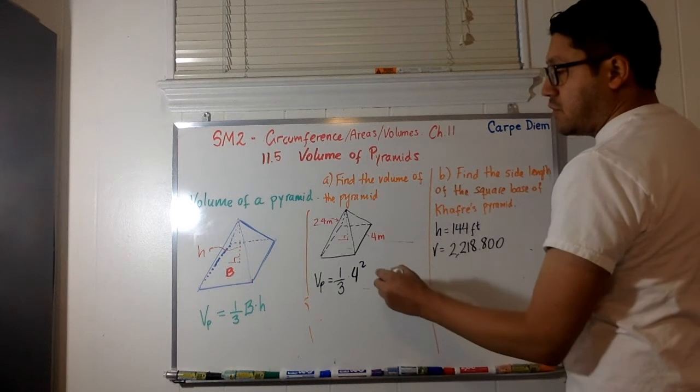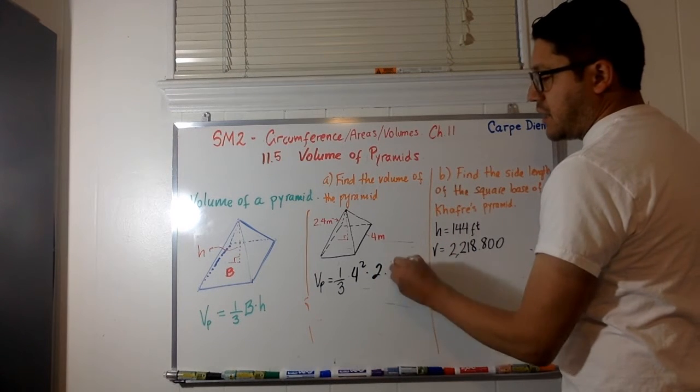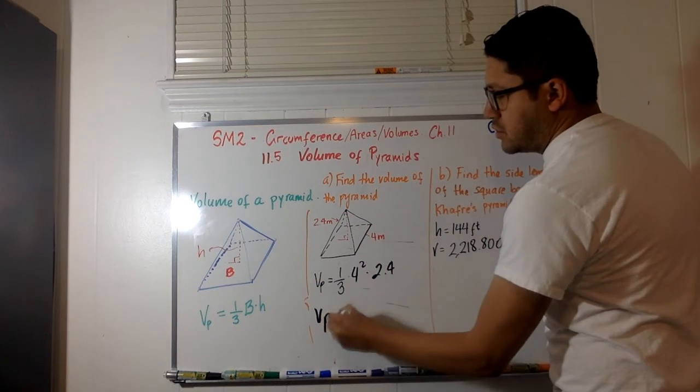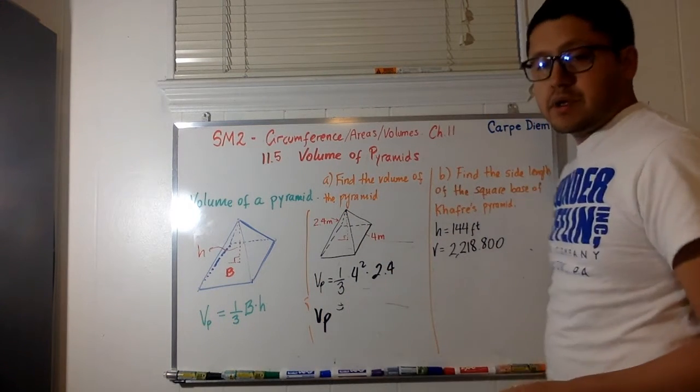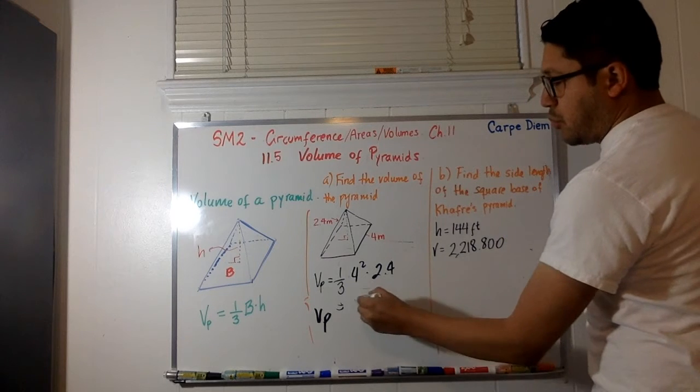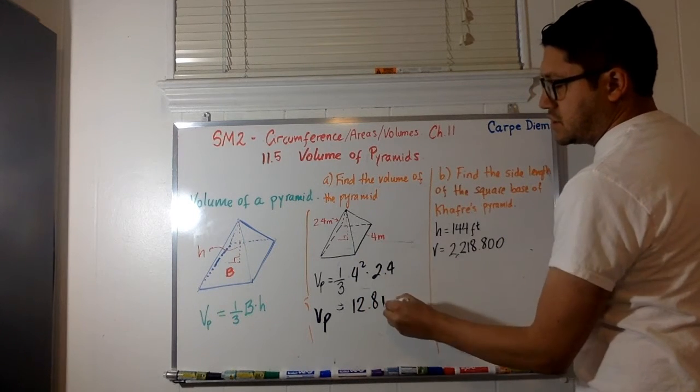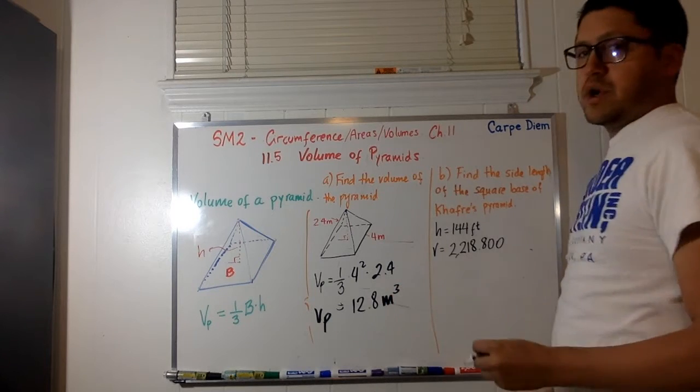So, it's 4 multiplied by 4 multiplied by the height, which is 2.4. And we're talking about meters, so when you multiply all these numbers together, we're going to have 12.8. And the units we are using are square meters.